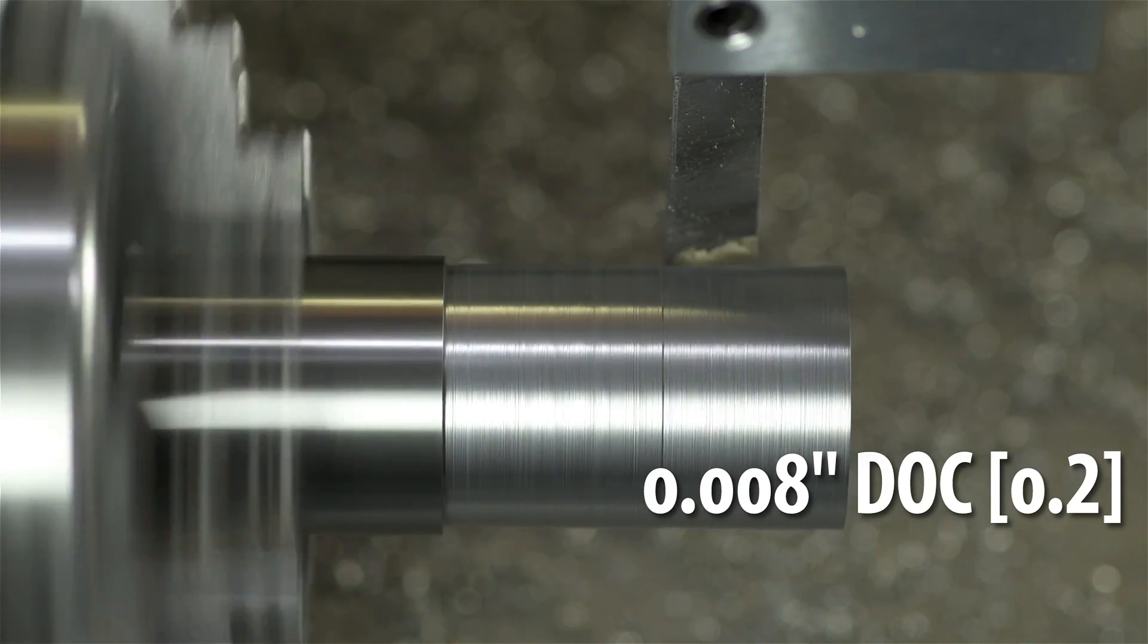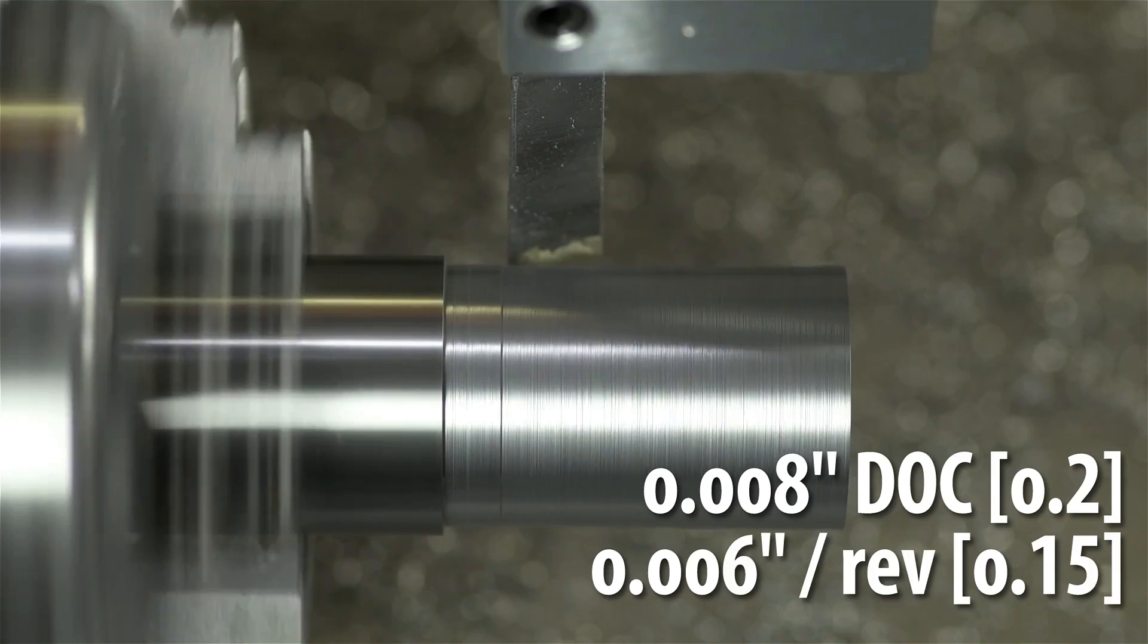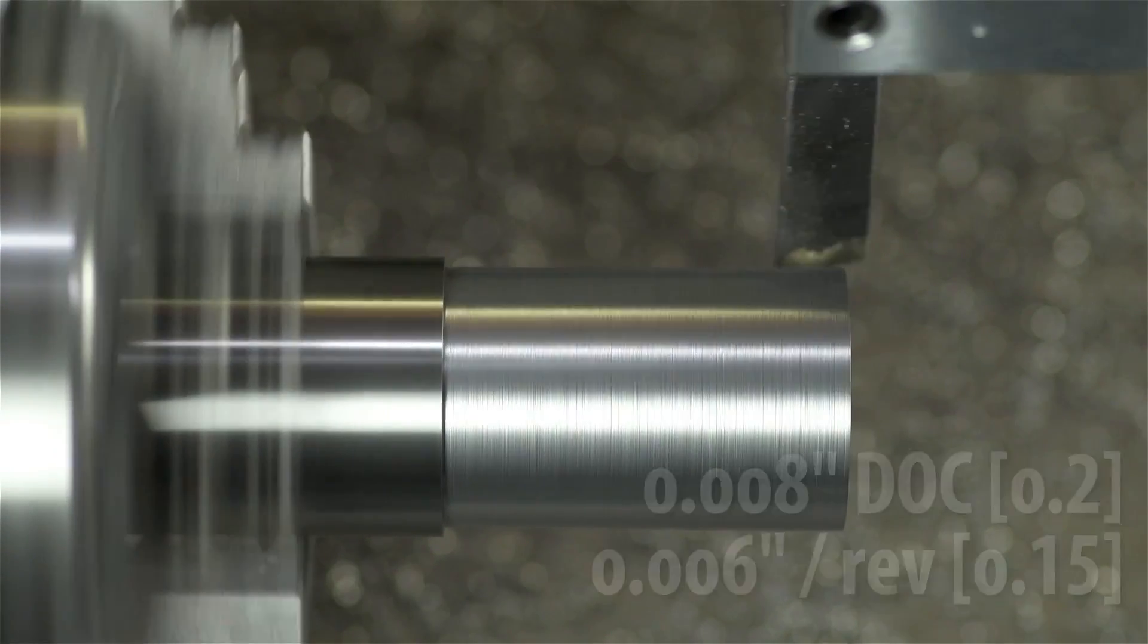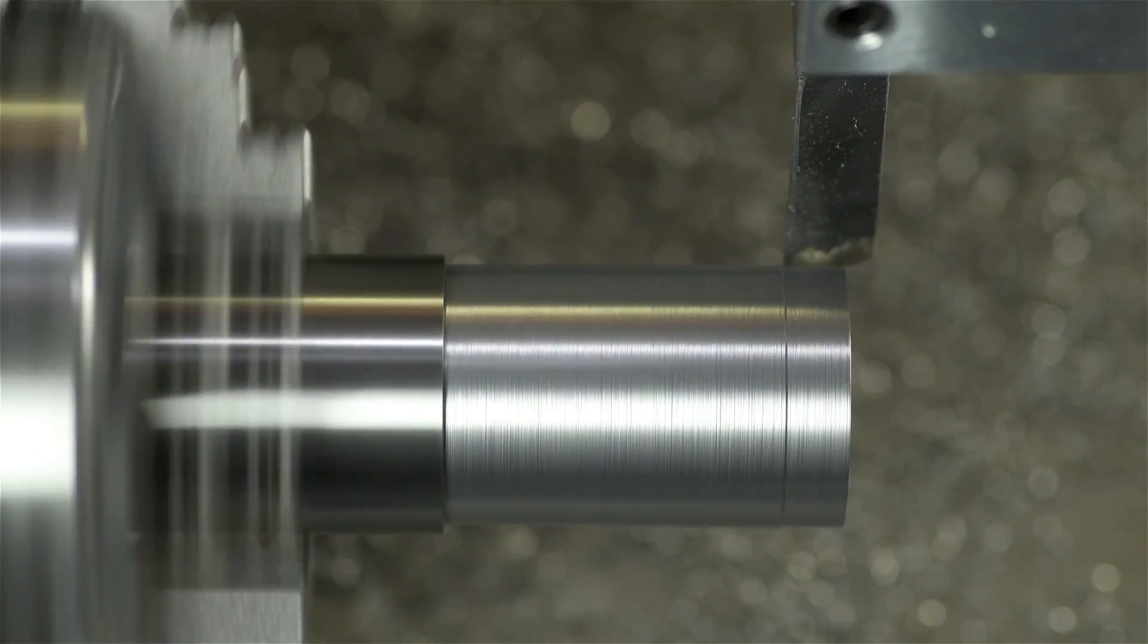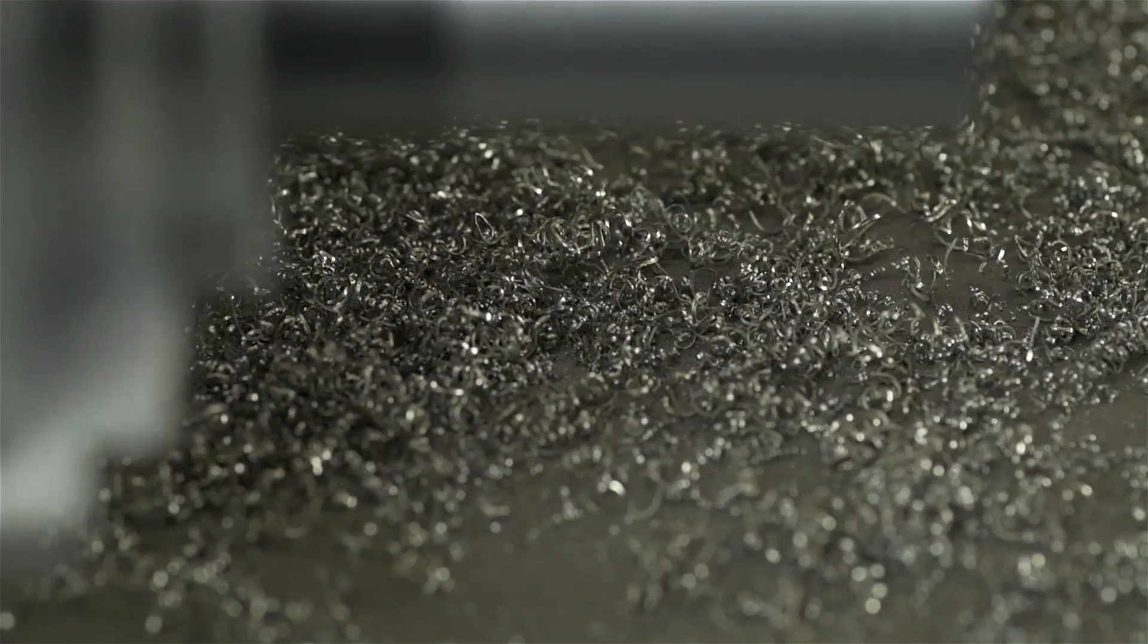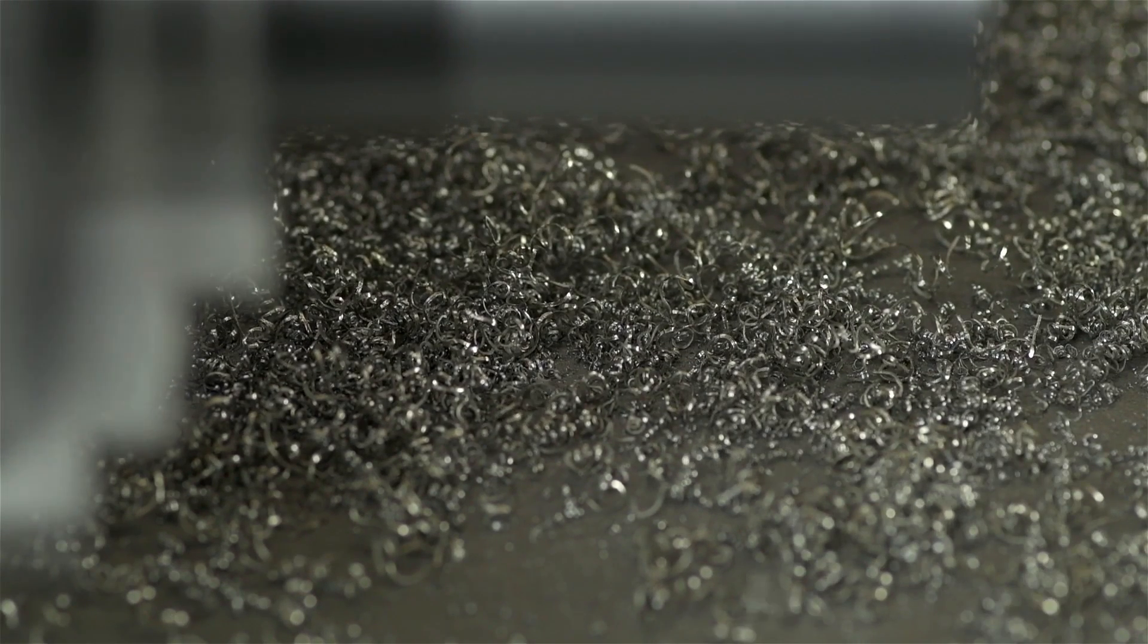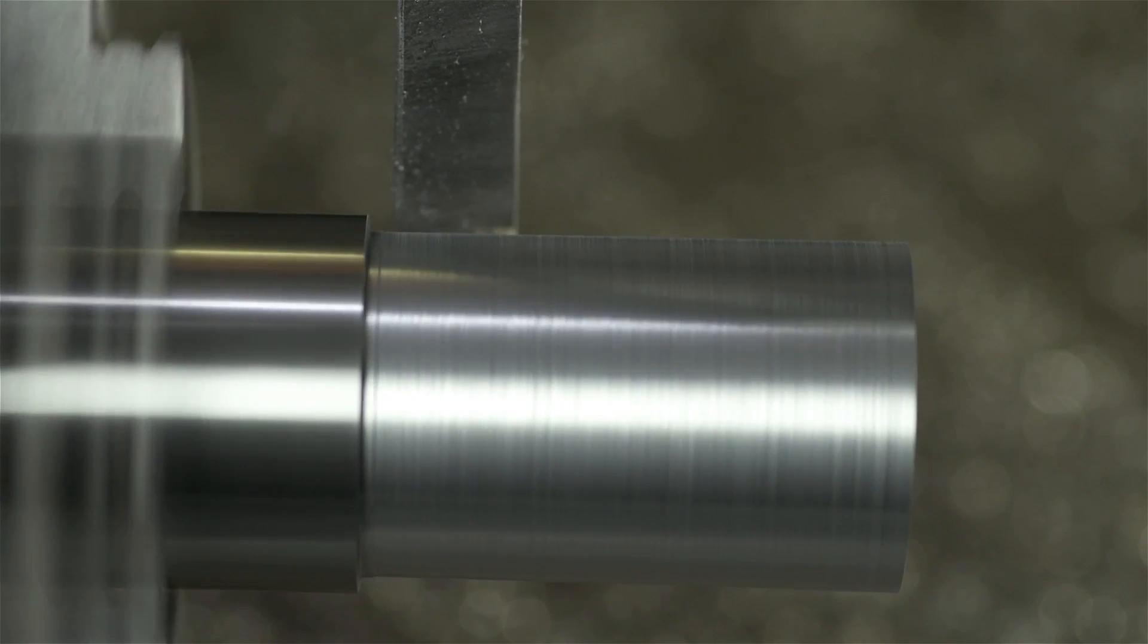This is 8 thou depth of cut, so twice what we started with, and a higher feed rate, about 6 thou per rev. The motor is bogged down, but keeping a stiff upper lip. The chips look decent.